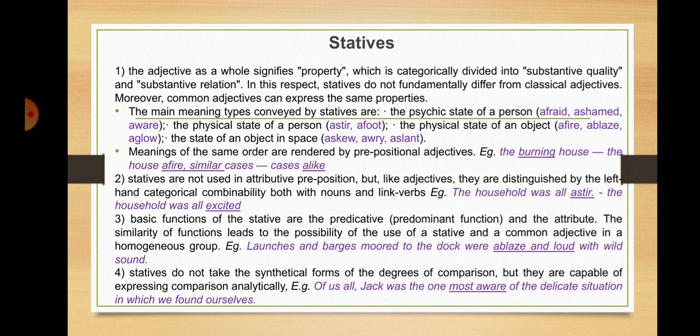Moreover, common adjectives can express the same properties. The main meaning types conveyed by statives are: psychic state of a person — 'afraid', 'ashamed', 'aware'; physical state of a person — 'astir', 'afoot'; physical state of an object — 'afire', 'ablaze', 'aglow'; and the state of an object in space — 'askew', 'awry', 'aslant'.